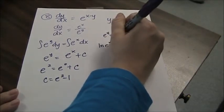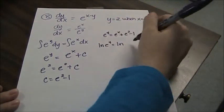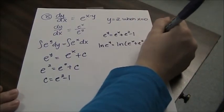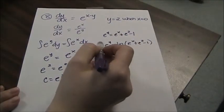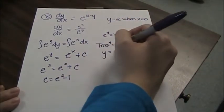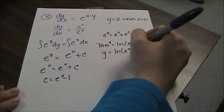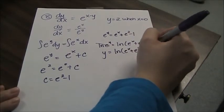The natural log of e to the y equals the natural log of e to the x plus e squared minus 1. And then natural log of e cancels, and you're left with y equals natural log of e to the x plus e squared minus 1.